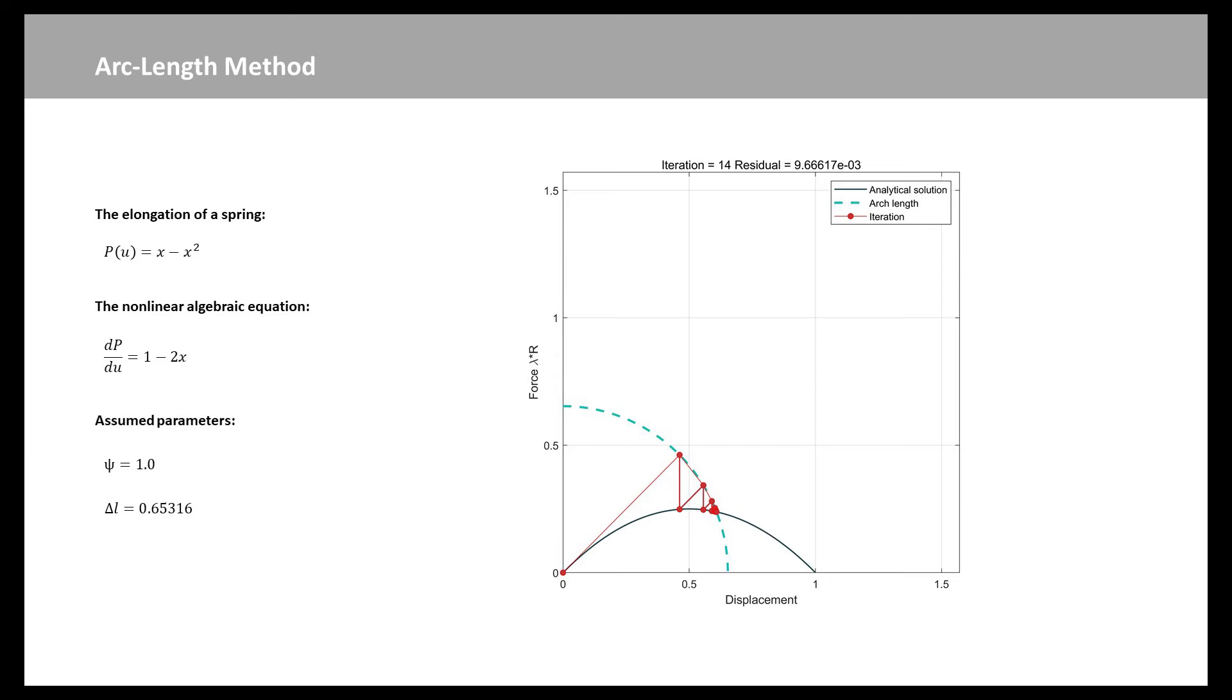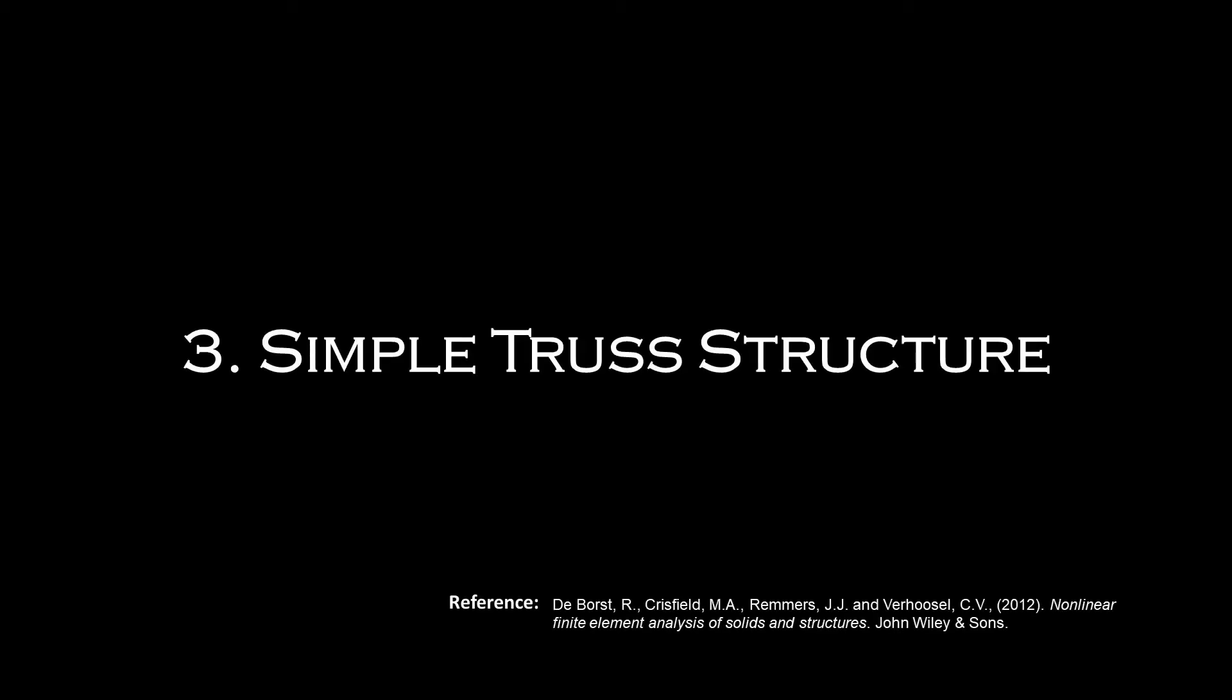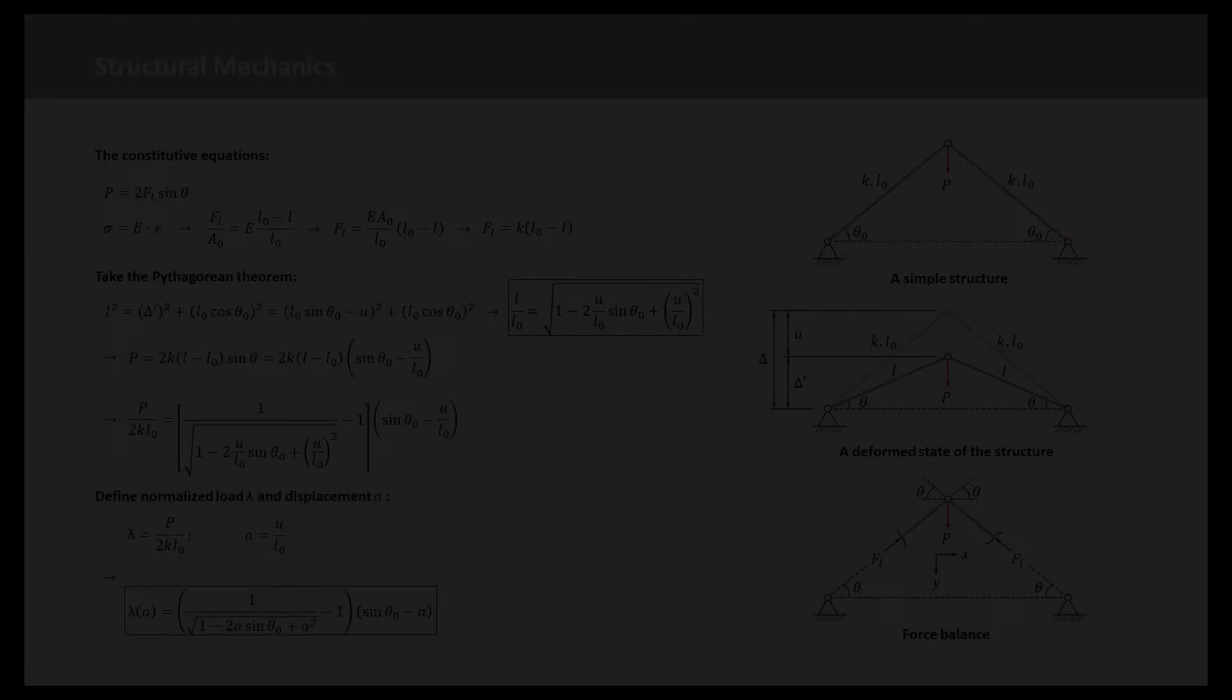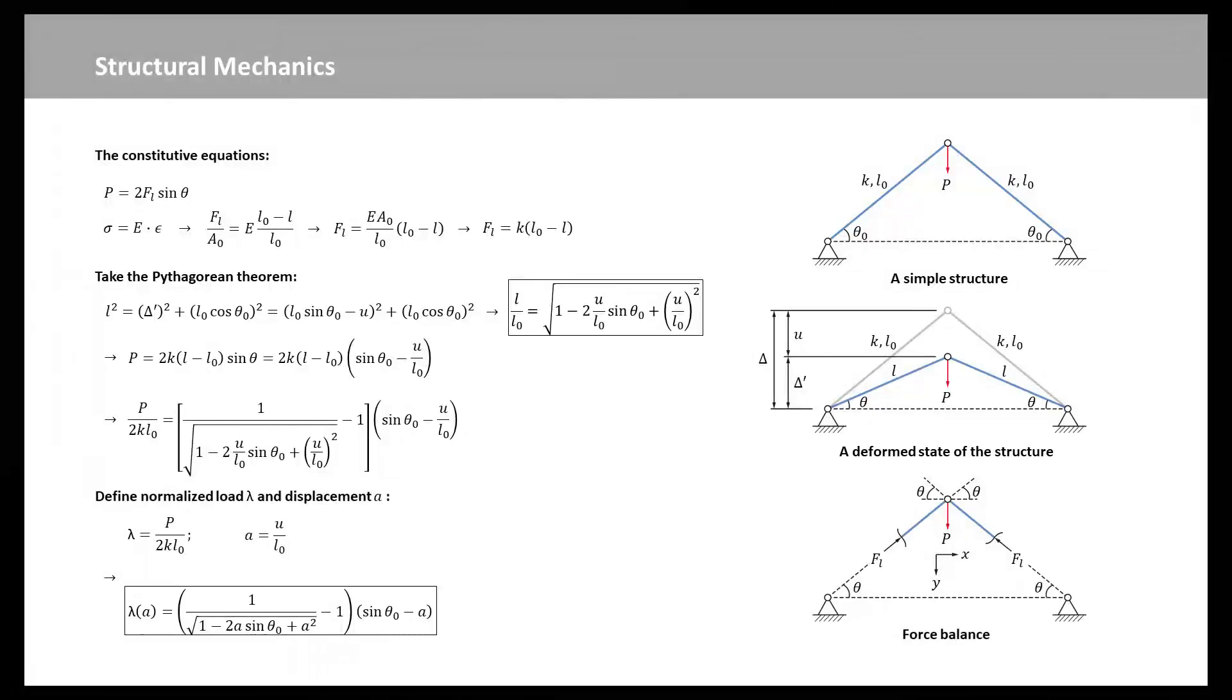Okay, now we know the two solution methods of nonlinear finite element analysis. Next, we can consider a simple truss structure to compare the two methods. The structure comprises two truss members with initial length L₀ and cross-section A₀ that initially form an angle theta₀ with the horizontal axis.